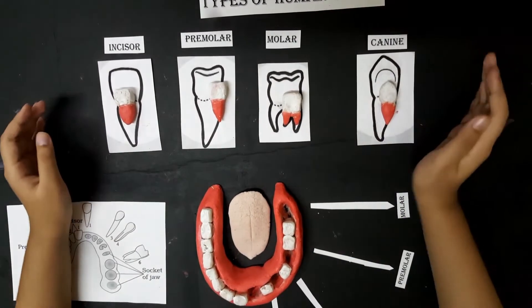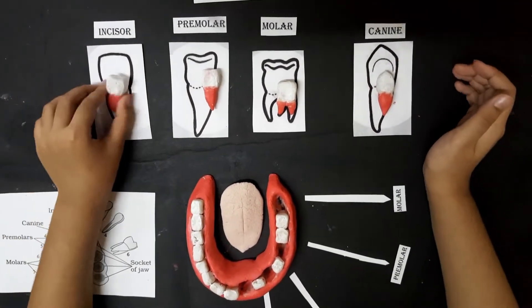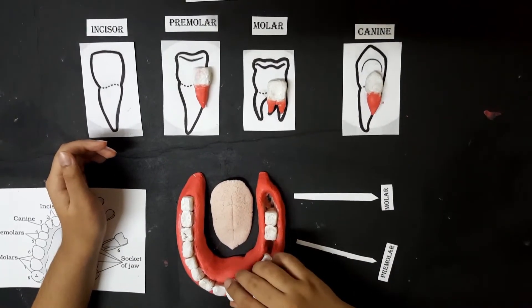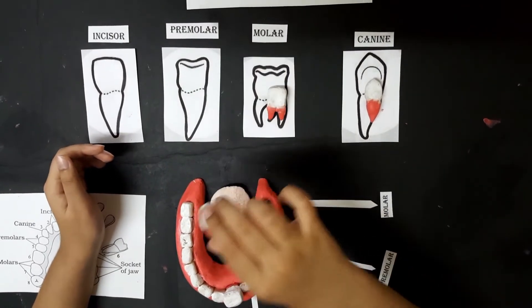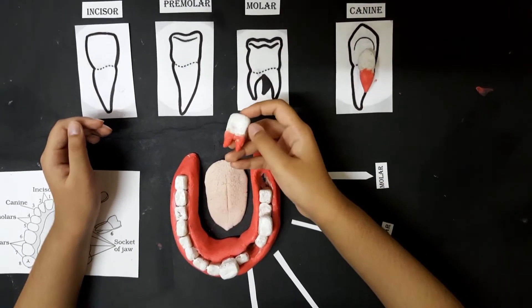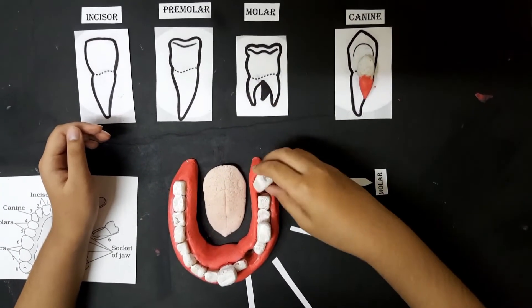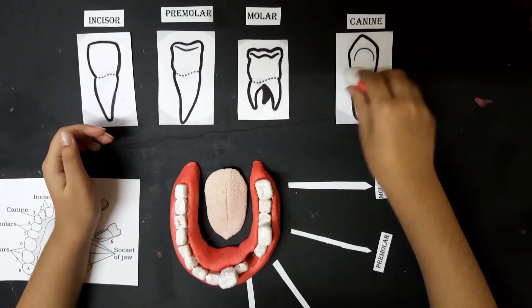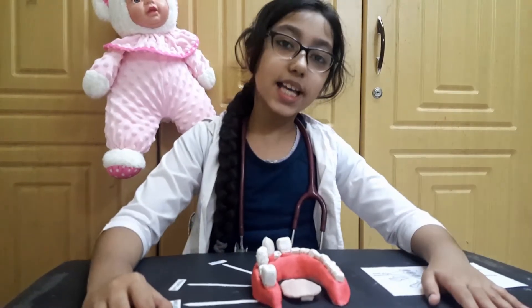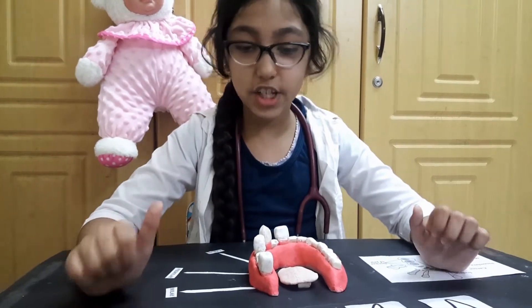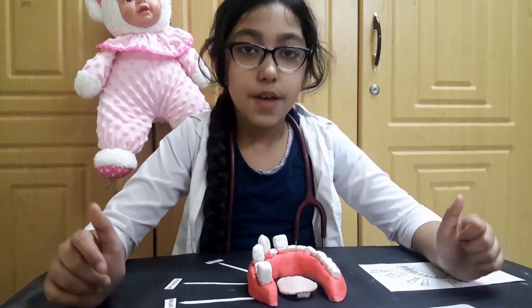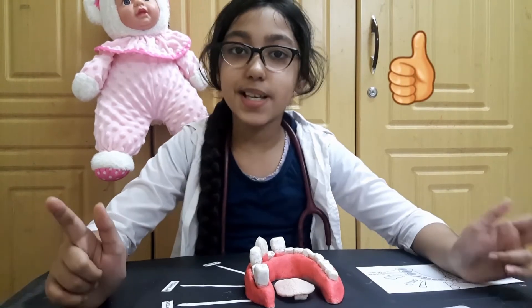Now for a recap, I'm going to put them all in their positions again: incisor, premolar, molar, and canines.